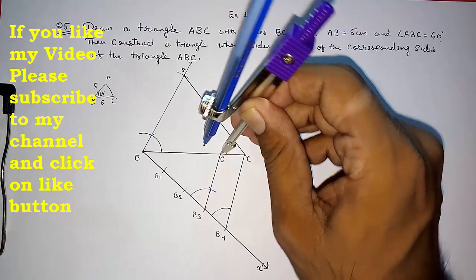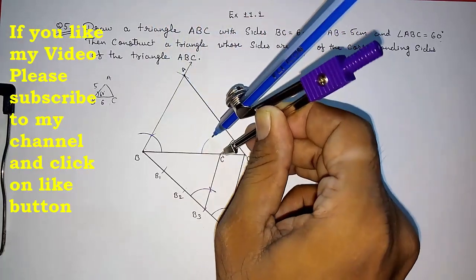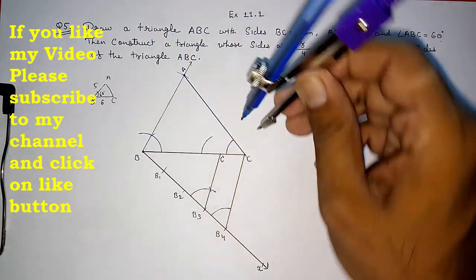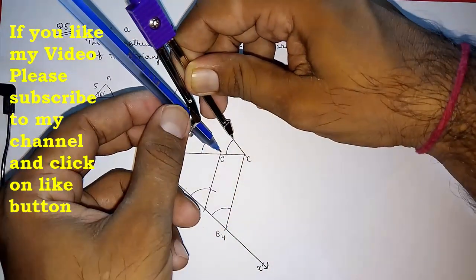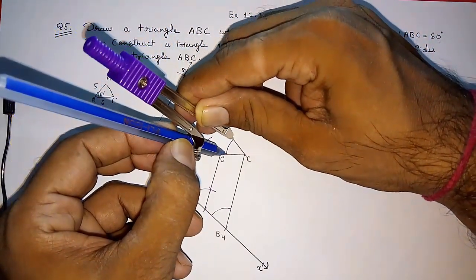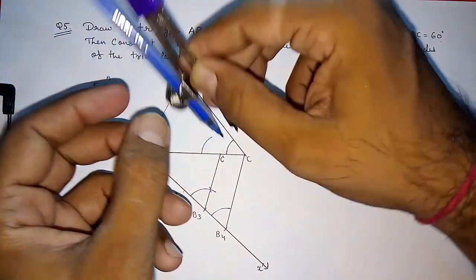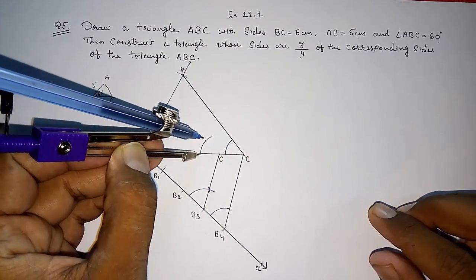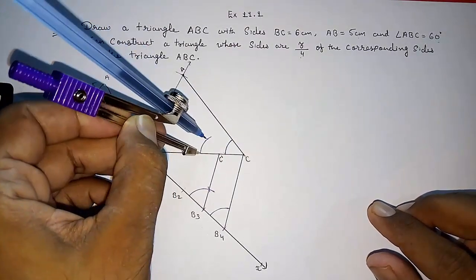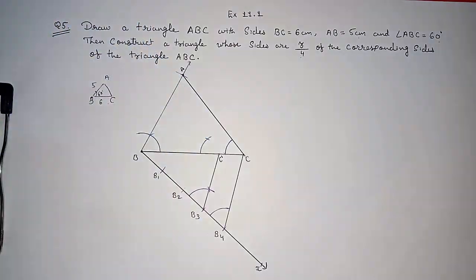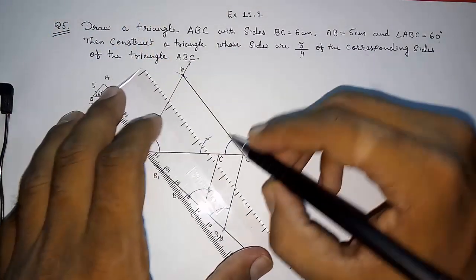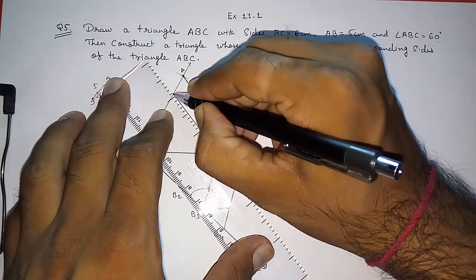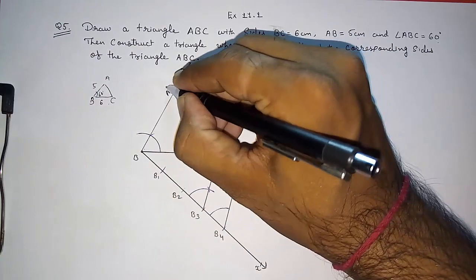Again you also have to draw arc from C dash. And then measure the starting and the ending point distance of that arc. Here also with the same measurement cut an arc. Now again I am drawing a line parallel to this from here to.